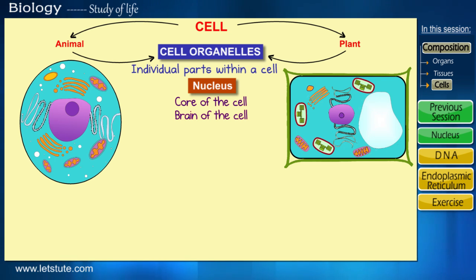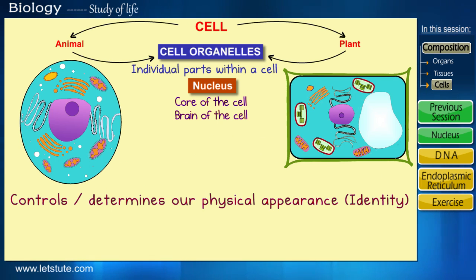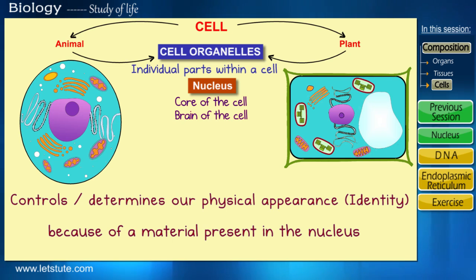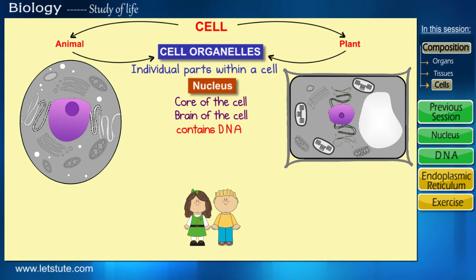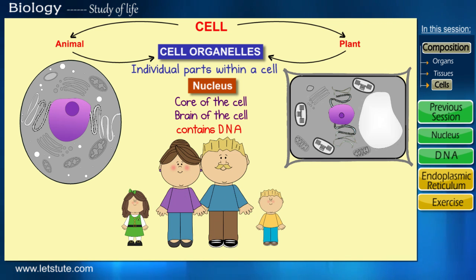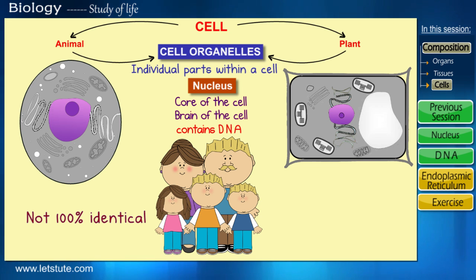So how and what exactly does the nucleus control? It controls and determines our physical appearance because of some material present within the nucleus. This material is called DNA, which stands for deoxyribonucleic acid. Our DNA is passed on to us by our parents, and this is the reason why we look similar to our parents.